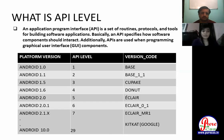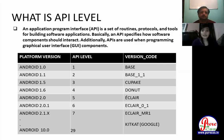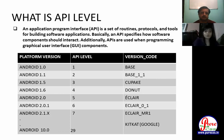Next, what is API level? An Application Programming Interface is a set of routines, protocols, and tools for building software applications. Basically, an API specifies how software components should interact. APIs are also used when programming graphical user interface components. These are the platform versions with their API levels and version codes. Currently, Android 10.0 has API level 29, led by Google, with version code Q.